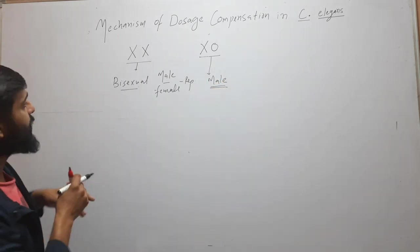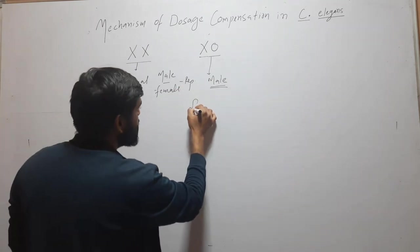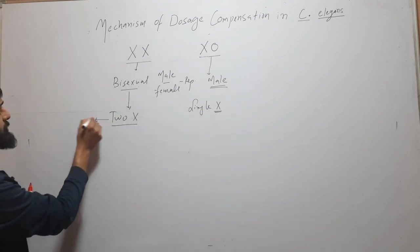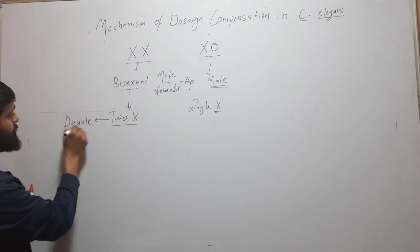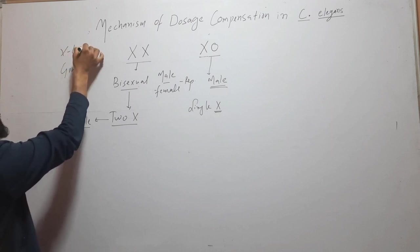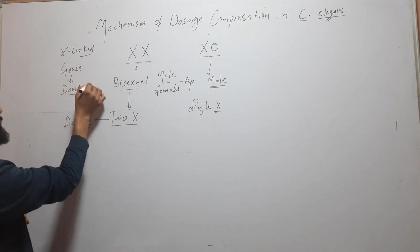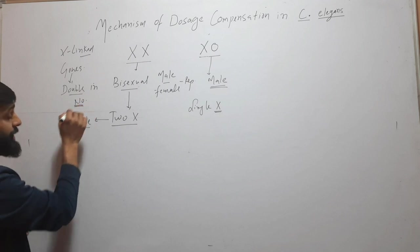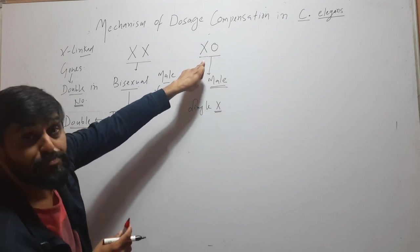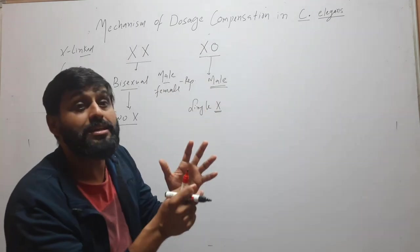The XO organism develops into male. So the bisexual has two X chromosomes, while the male has a single X chromosome. This means the dosage of X chromosome genes — the X-linked genes — is double in the bisexual compared to the male.